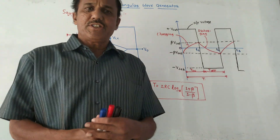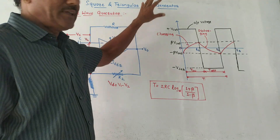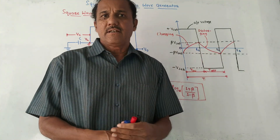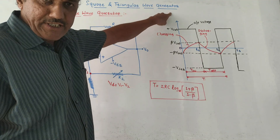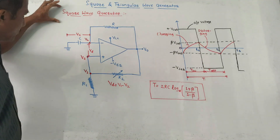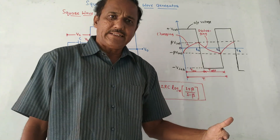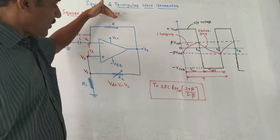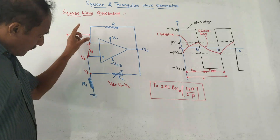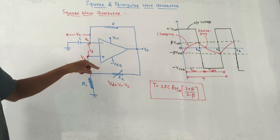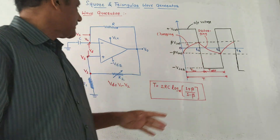Hello and welcome back to this channel. This is the last topic of unit number 5 of the subject electronic circuits. Dear students, this topic is square and triangular wave generator. First part is square wave generator. From the exam point of view, we may expect a question like: draw and explain the square wave generator using op-amp. We will discuss the circuit which generates square wave as well as how the square wave waveform is generated.